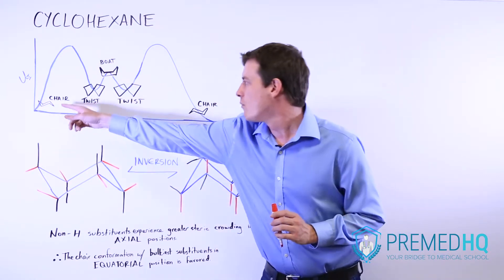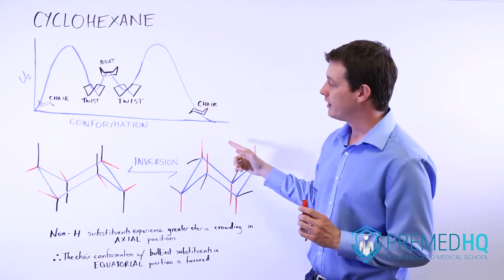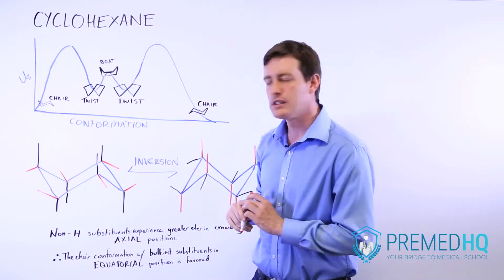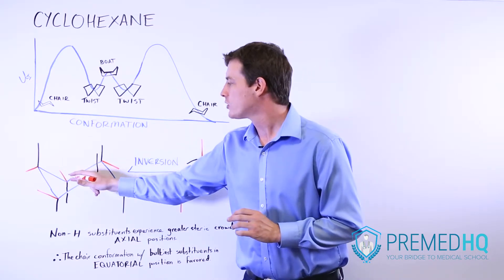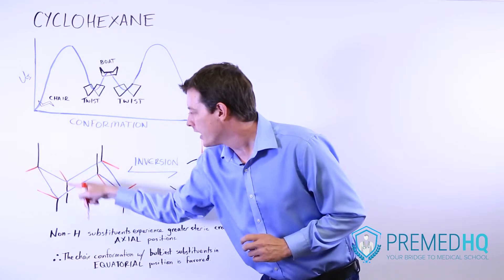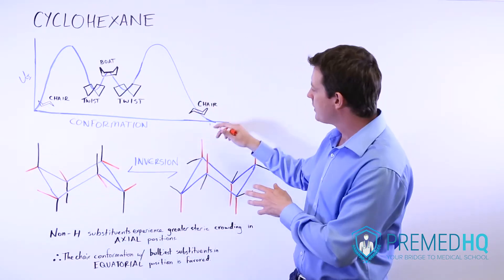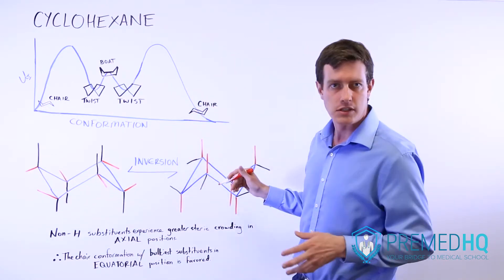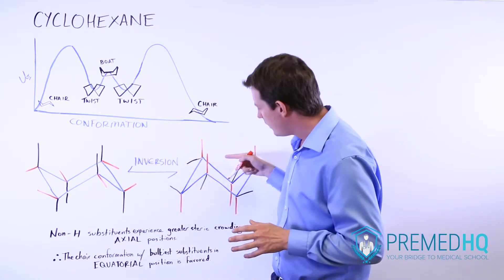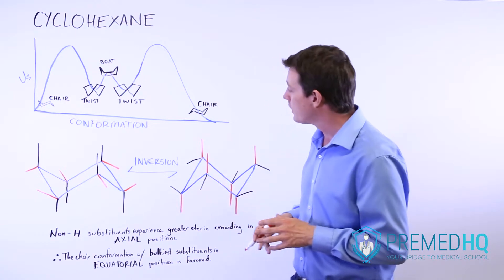What happens when you move from one chair to the other chair is that you see an inversion of the chair. And when that happens, the substituents that were equatorial now become axial. So here, the red equatorial substituents are now becoming red axial substituents, whereas the ones that were previously axial, these black substituents, are now becoming equatorial.